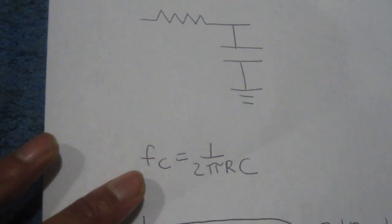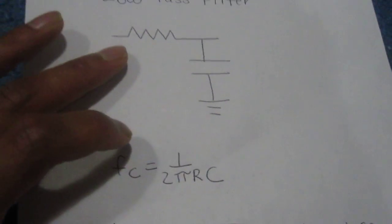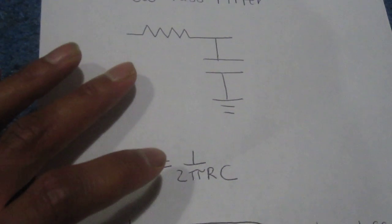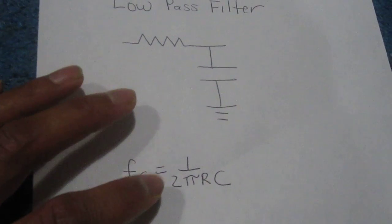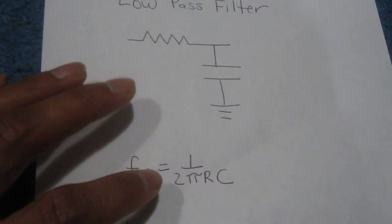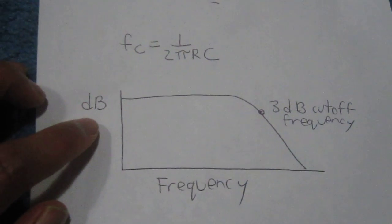And this is the formula to calculate the 3dB cutoff point of the low-pass filter. So plugging in the values I chose, 1k ohm resistor and a 10 nanofarad capacitor, this works out to a 3dB cutoff point of approximately 15.9 kHz.